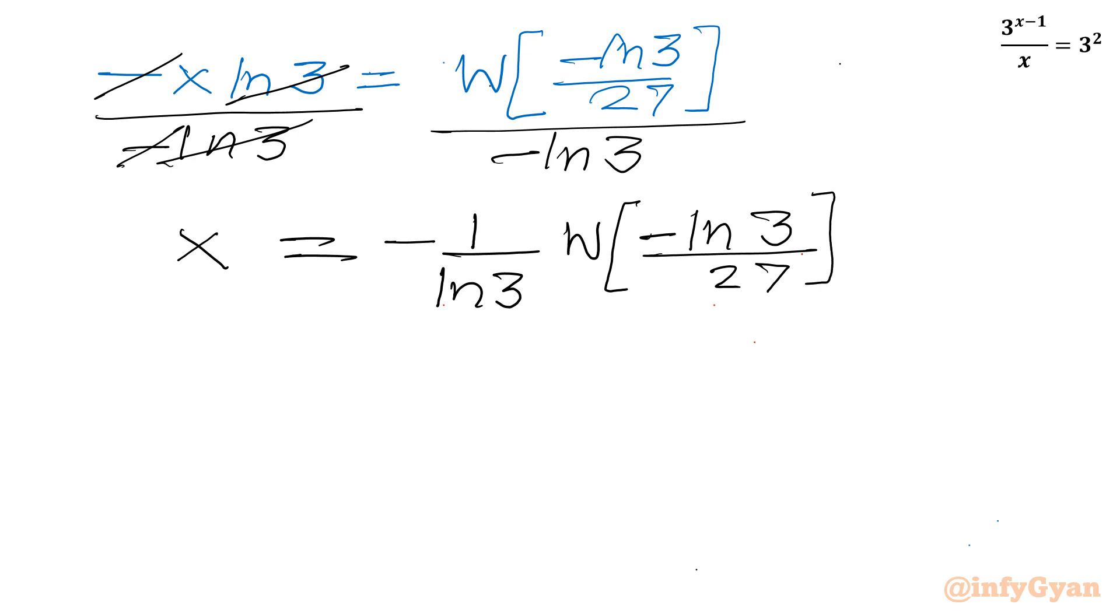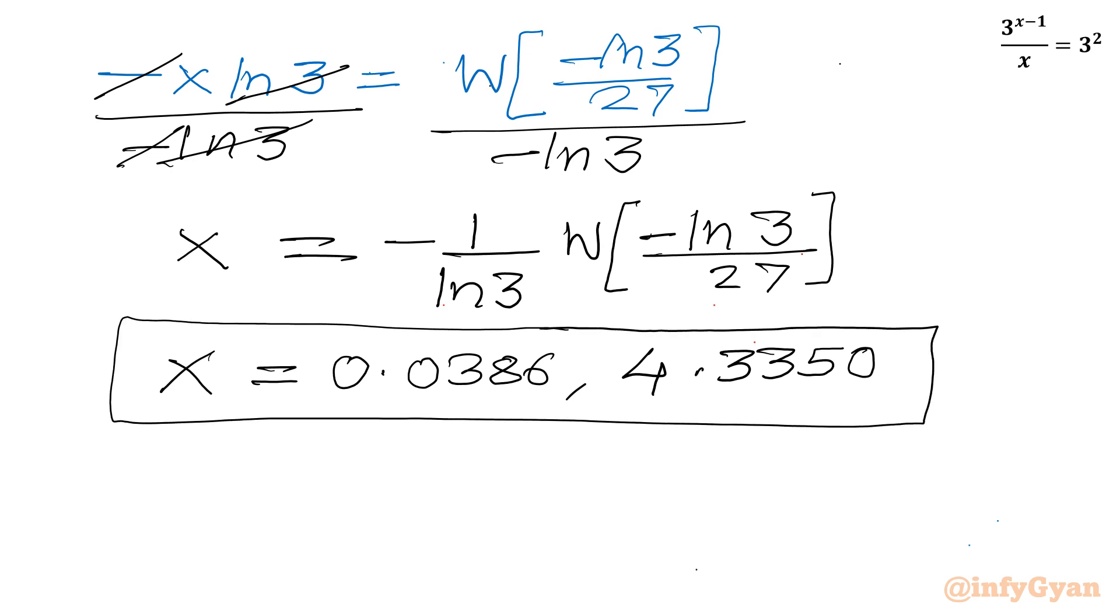Now using Wolfram Alpha tool, I can write x will come out to be 0.0386 and the second value which we will be having is 4.3350. So two real values which are in the x positive interval: 0.0386 and 4.3350.